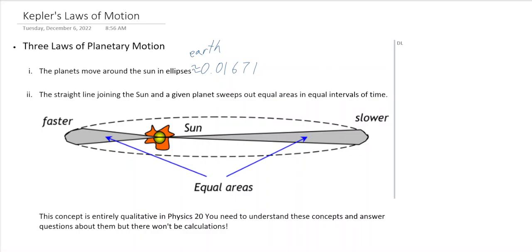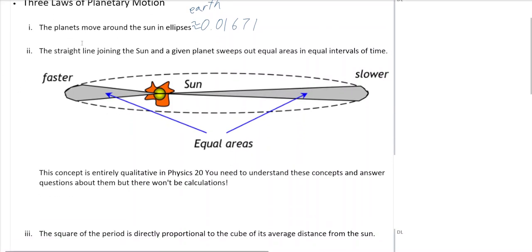But the deviation that there is can be described in these couple other ways. So the straight line joining the sun and a given planet sweeps out equal areas and equal intervals of time. So you can see here that this is the orbit of a planet. And actually this works for any orbiting body, not just a planet. But if the Earth is moving from here to here, it sweeps out an area that's equal to here to here. The sweeping out part is this gray part here.